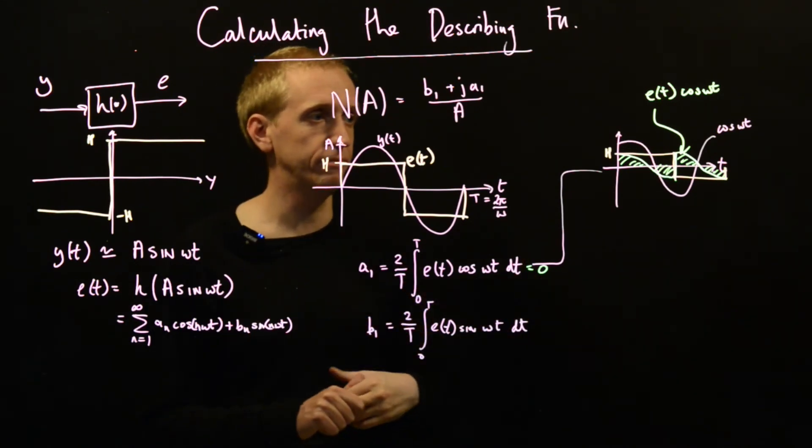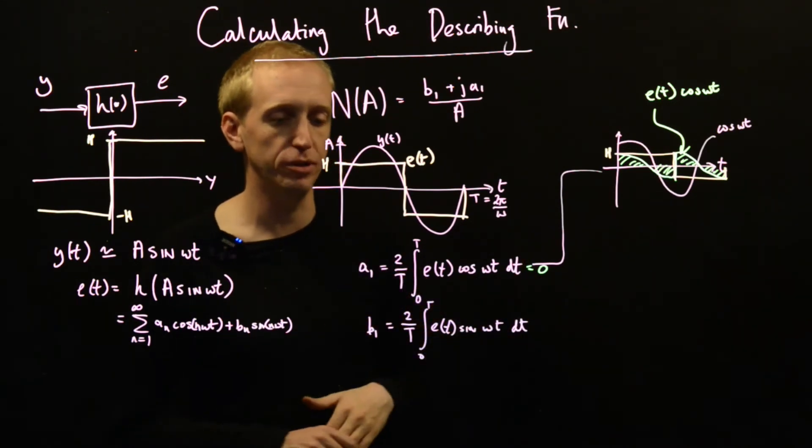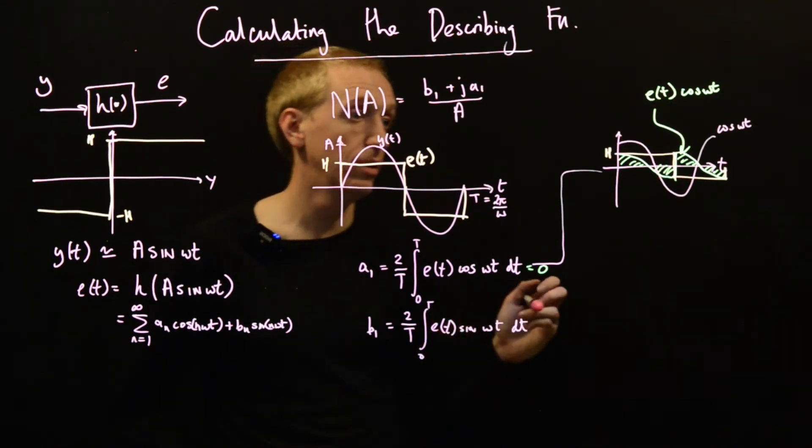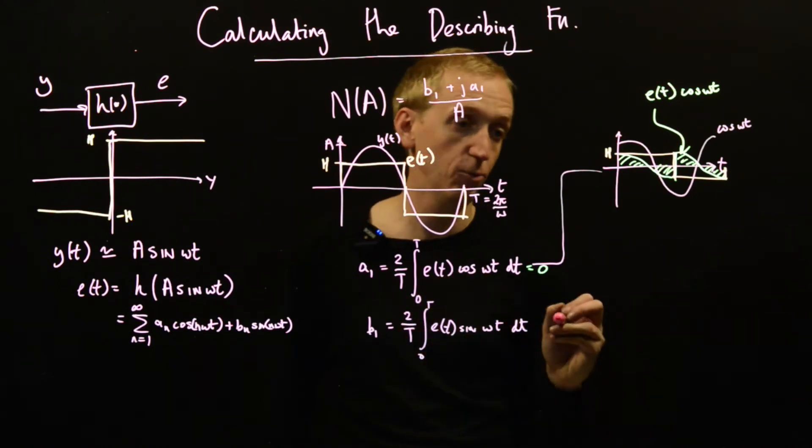Whenever you have an odd function and you find its Fourier series, these coefficients will always be zero. Okay, great.